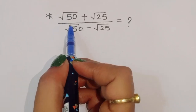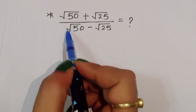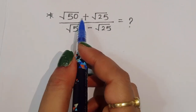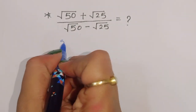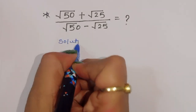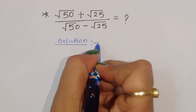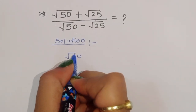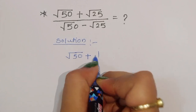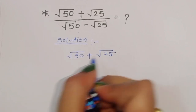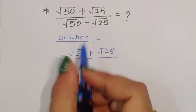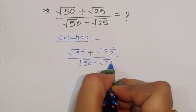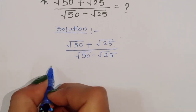The question is: given (√50 + √25) divided by (√50 - √25), what is this equal to? We have to solve this question. Let's see the solution. First, what is given: (√50 + √25) divided by (√50 - √25).